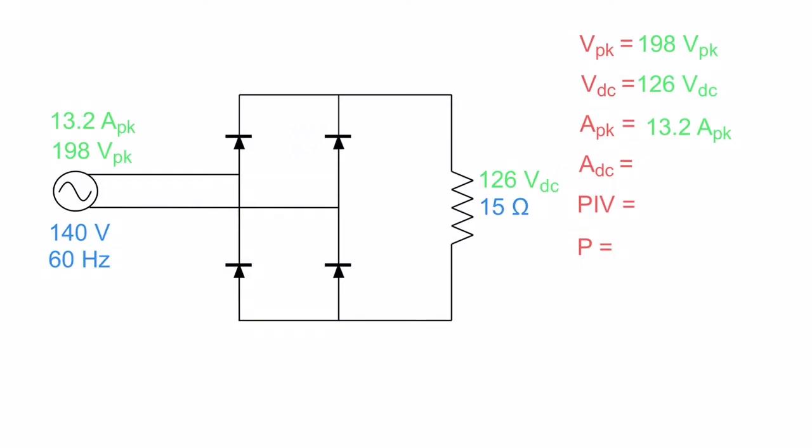And the same thing to get my DC current. There's two ways. I can take this peak and multiply it by 0.637, or I can take the voltage that I already have, 126 volts DC, divide it by 15 ohms, and I'll get the same answer. 8.4 amps DC. So let's put that over on the side.